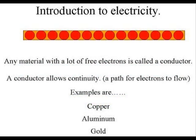A piece of wire, for our example, is a good conductor. A conductor is any material that has a lot of free electrons in it, willing to move around. Some examples of good conductors are copper, aluminum, and gold.